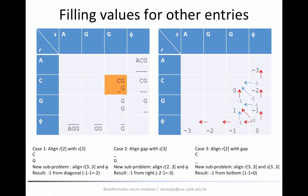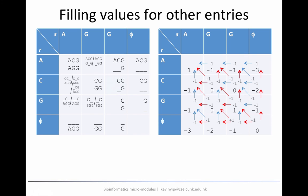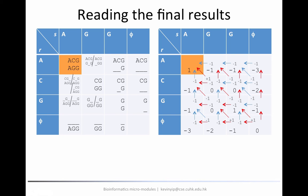We repeat this process for every cell in the table. Finally, we have a completed table with all entries filled in and all red arrows marked — for each entry there will be at least one, and sometimes more than one, red arrow pointing in. Going to the upper left corner, the final score is one. That means aligning ACG and AGG optimally gives a score of one, which makes sense: the best alignment has no gaps, giving two matches and one mismatch, for a score of one. The corresponding alignment is also shown on the left-hand side.